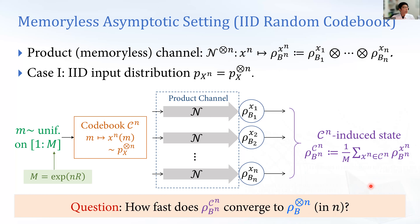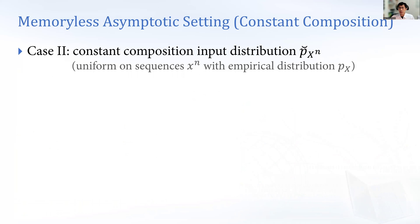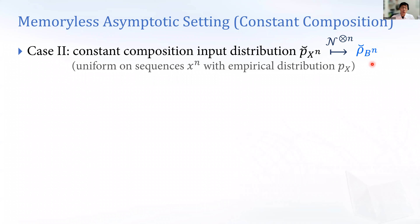We also consider the constant composition input distribution, which is a uniform distribution over sequences x^n whose empirical distribution equals p_x. The corresponding output distribution is ρ_B^{(n)}, which is no longer a tensor product state. We use an accent here to denote it is a constant composition input-output distribution.